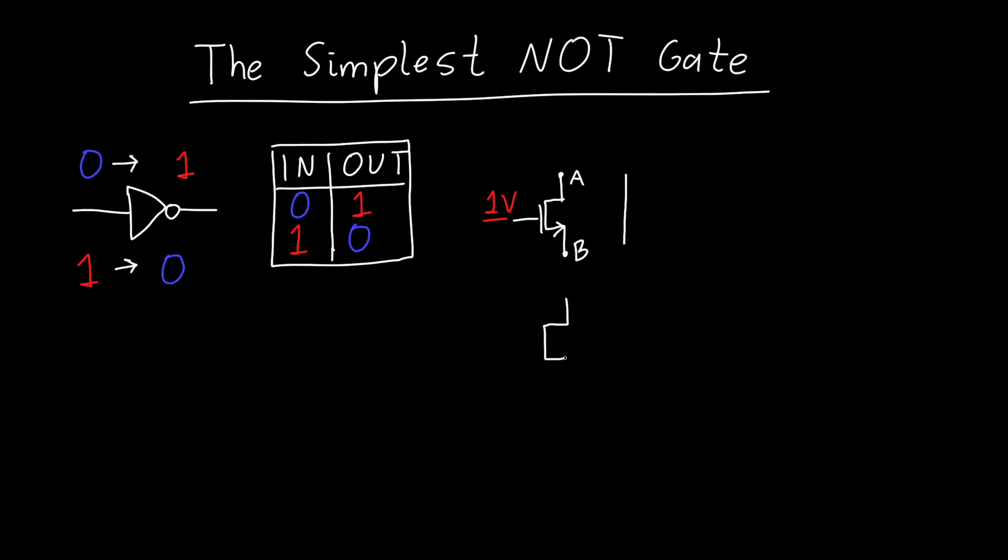But when the input to that transistor is zero volts, the transistor acts like an open circuit, or it acts like an open switch. So from point A to B, no current can flow. It acts like an open circuit.